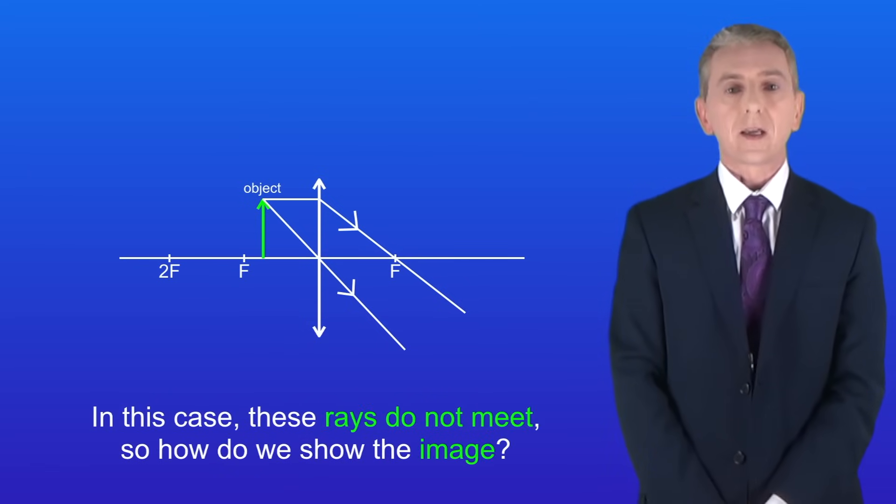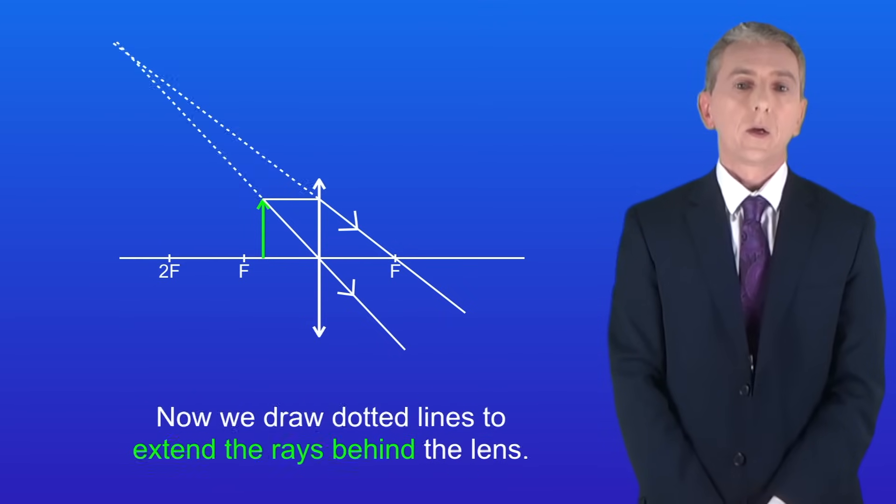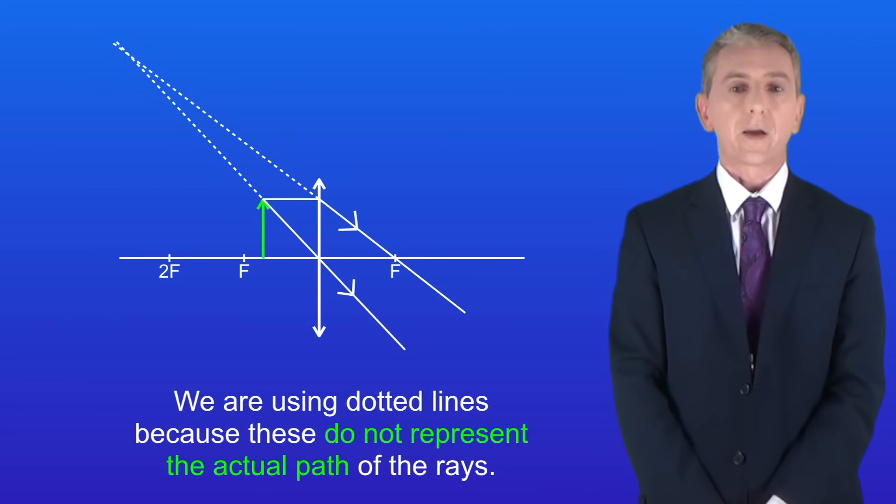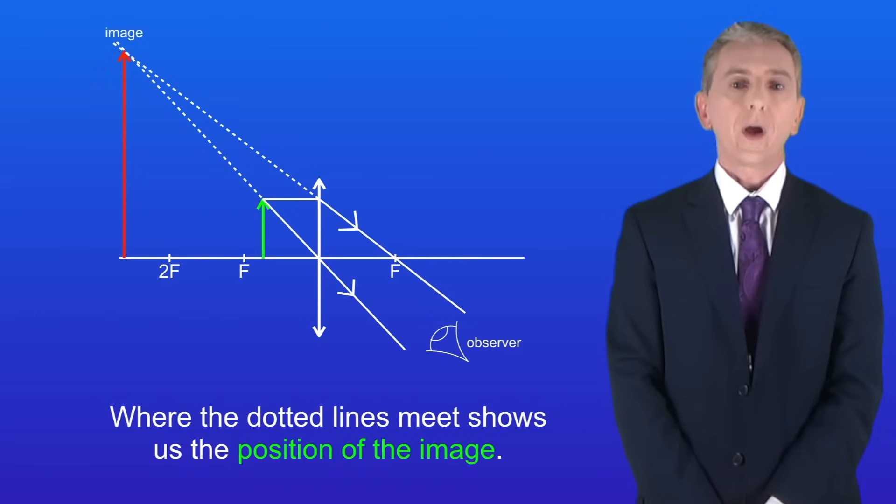Now you'll notice that in this case these rays do not meet. So how do we show the image? Well now we draw dotted lines to extend the rays behind the lens like this. We're using dotted lines because these do not represent the actual path of the rays. Where the dotted lines meet shows us the position of the image.